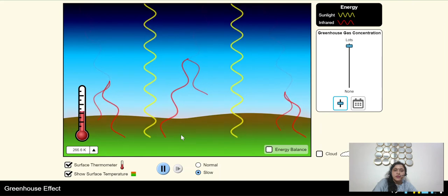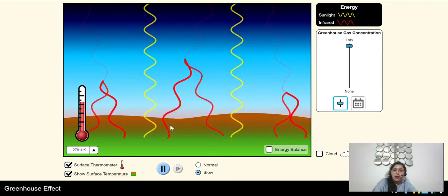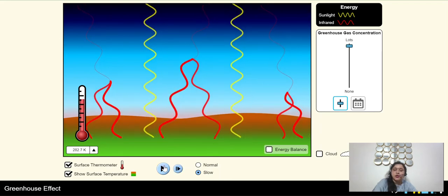See the thickness of the infrared rays. This thickness shows that the percentage of infrared rays start increasing in the atmosphere.